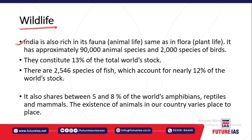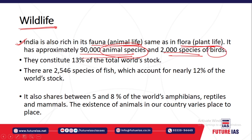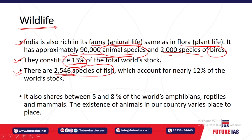Regarding wildlife, India is very richly endowed in terms of fauna and flora. Many species are endemic to India. India has approximately 90,000 animal species, and around 2,000 bird species are found in India, accounting for around 13% of the total world bird population. India also has 2,546 species of fish, accounting for around 12% of the world's known fish species.